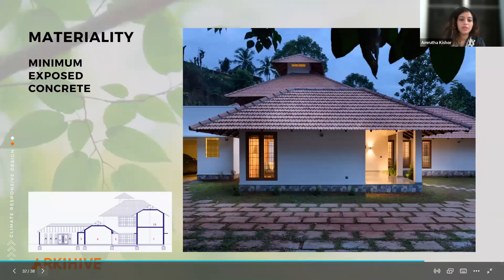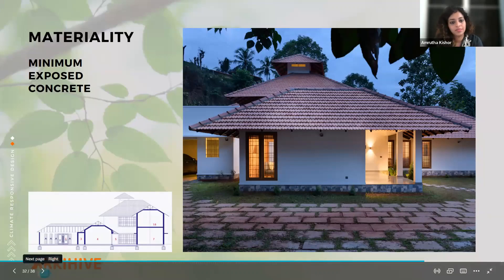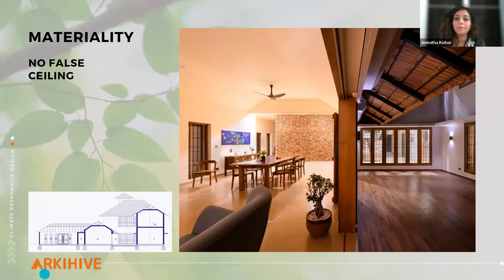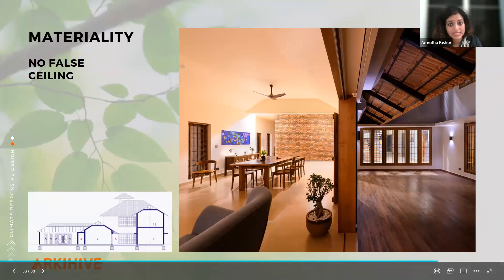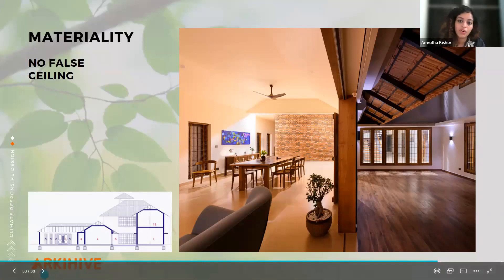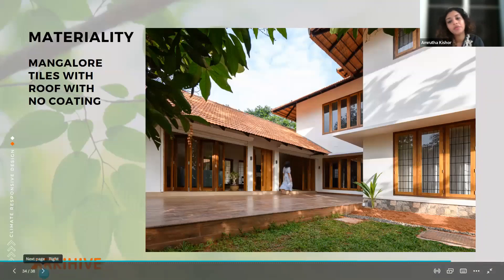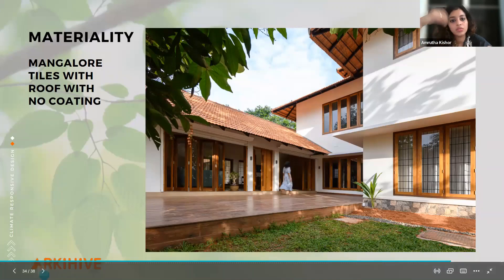There is minimal exposed concrete in the structure — except for one garage roof, there is barely any. The structure is completely minimal with no false ceilings; it is kept as raw as possible, finished nicely but without ornamental elements. The Mangalore clay tiles used on the roof have no extra coating, which means the clay property of the tiles helps bring in only limited heat.